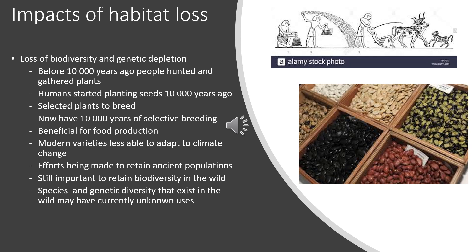Looking first at wetlands — it's difficult to estimate their extent, but seven to nine square kilometres is an estimate, roughly four to six percent of the Earth's land surface. Some of it includes rice paddies. For most years up until recently, wetland was regarded as worthless — just useless swamp where one couldn't grow anything.